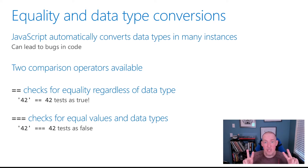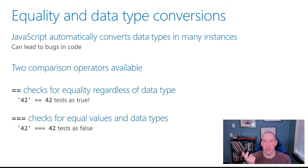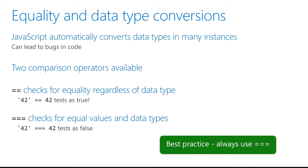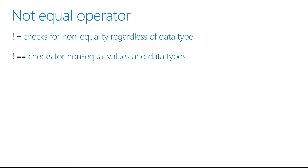JavaScript gives us two different comparison operators: the double equals and the triple equals. In the case of the double equals, it will automatically do a conversion, so the string '42' would actually be equal to the number 42 — probably not what we were expecting. But if we use the triple equals, those two values are not going to be equal because one is a string and the other is a number. This is typically the behavior we're expecting, and so as a general best practice, you should always use the triple equals.